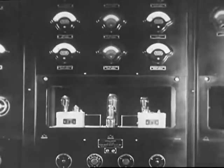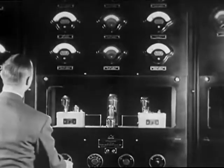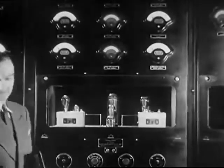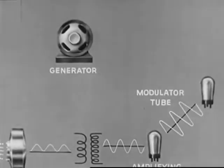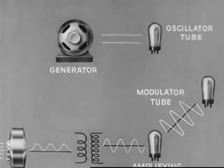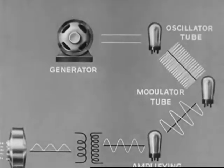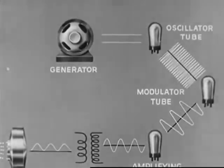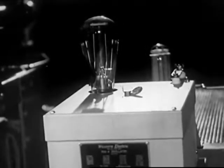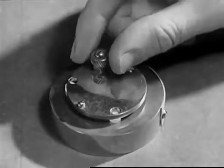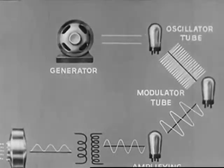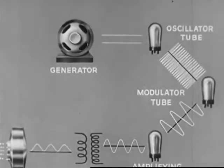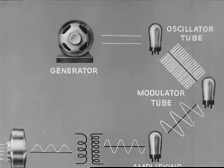The broadcasting station uses a high frequency current called the carrier wave to transmit the message. A generator supplies a direct current to the oscillator tube. The oscillator tube changes this direct current to a high frequency alternating current of several hundred thousand cycles per second. The box below this oscillator tube contains a quartz crystal which keeps the carrier wave at a constant frequency. This radio frequency current also goes to the modulator tube.